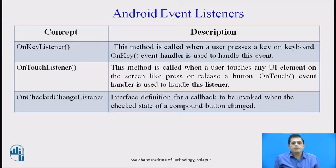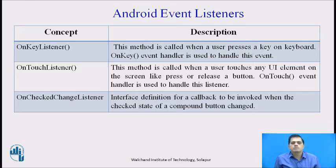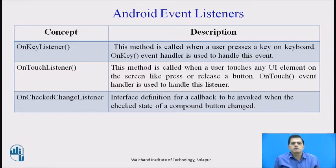More listeners: OnKeyListener — this method is called when a user presses a key on the keyboard. The OnKey Event Handler is used to handle this event, as the listener works on the OnKeyListener interface. OnTouchListener — this method is called when a user touches any user interface element on the screen, like pressing or releasing a button. The OnTouch Event Handler is used to handle this listener. OnCheckedChangeListener — interface definition for a callback invoked when the checked state of a component button changes.